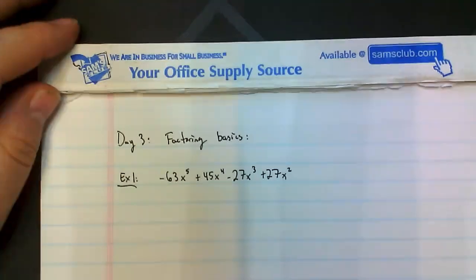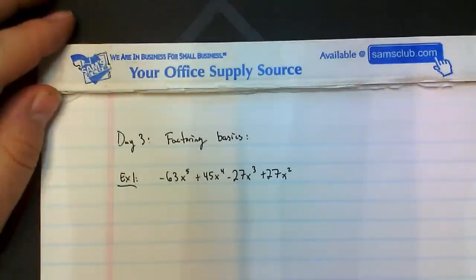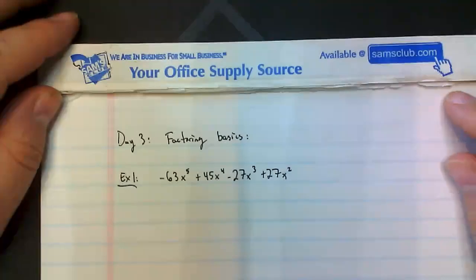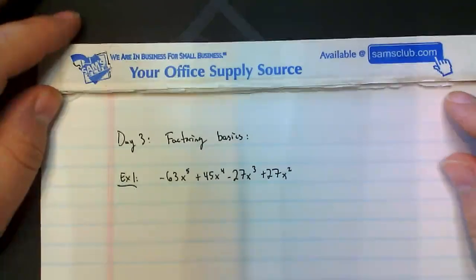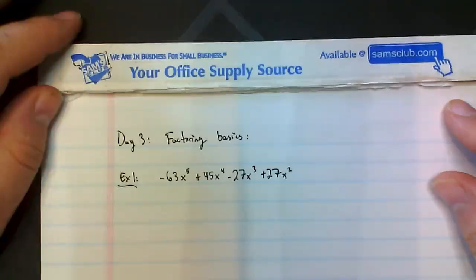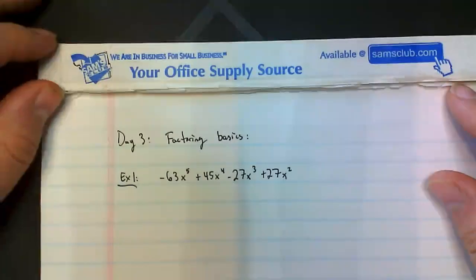Hello everyone and welcome back to Mr. Anderson's Algebra 1 lessons. Today we're going to be talking about factoring basics. I have two examples for us today that are going to be dealing with factoring out the common factor and finding the simplest form of the given term expression that they want you to factor.